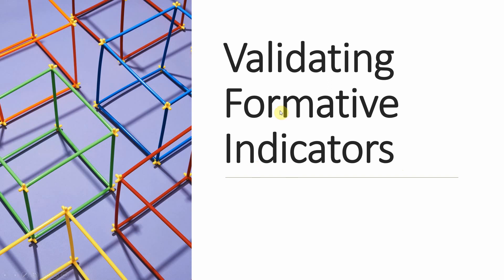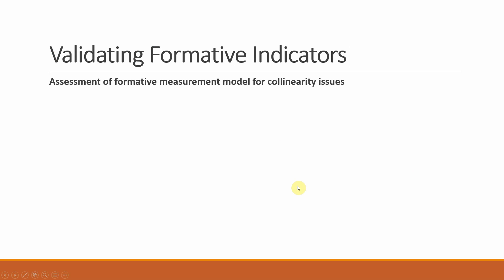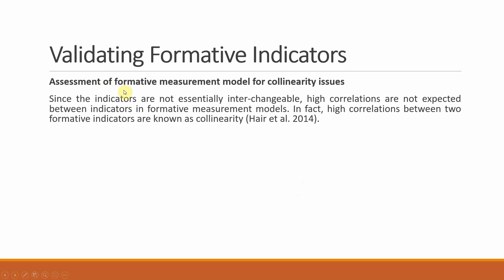In this session we are going to talk about how to validate formative indicators. The first step is assessment of formative measurement model for collinearity issues. Since the indicators are not essentially interchangeable, high correlations are not expected between indicators in formative measurement models.